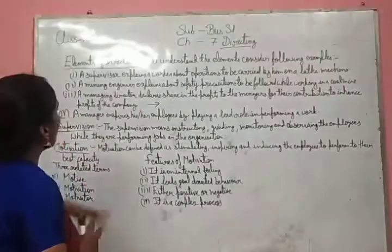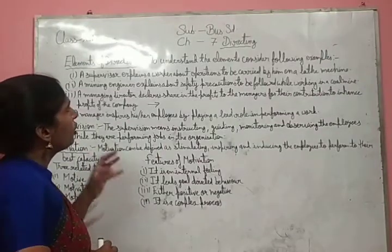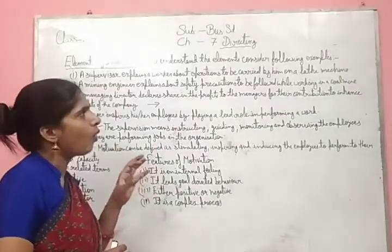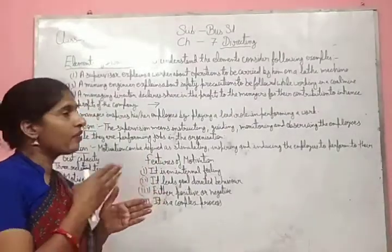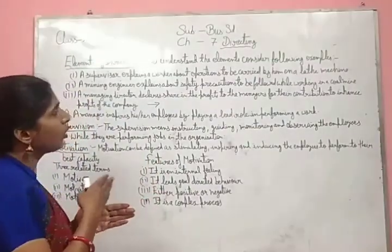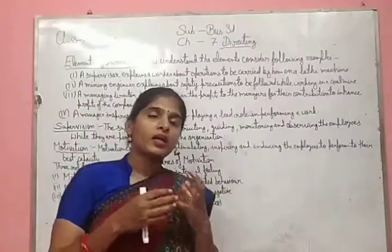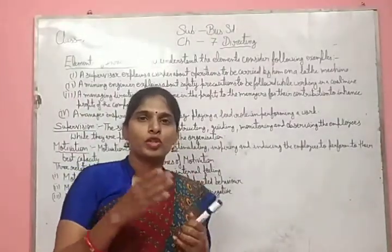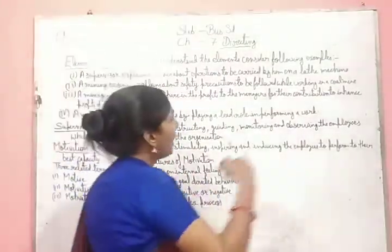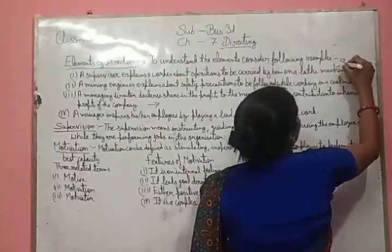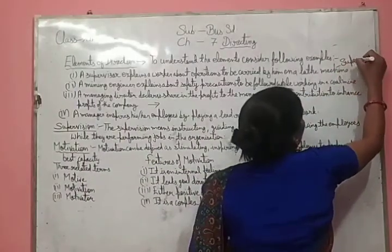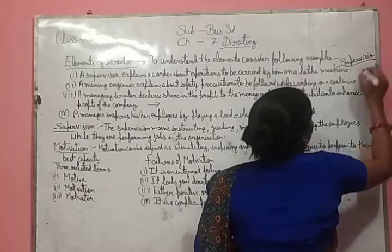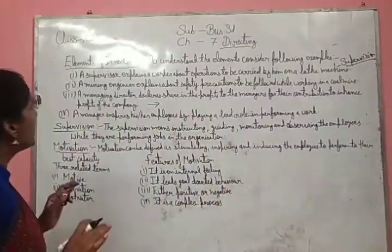First example: a supervisor explains a worker about operations to be carried out on a lathe machine. The supervisor is explaining to his worker about how to work on a lathe machine — about the operations of the lathe machine. So this is supervision, our first element of direction.